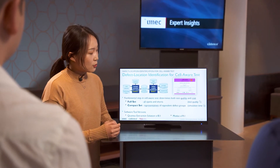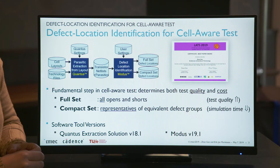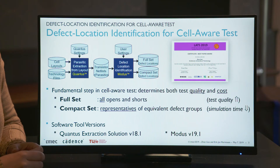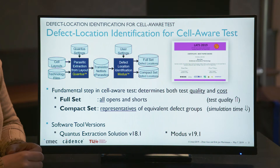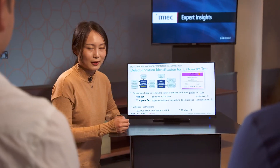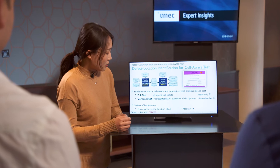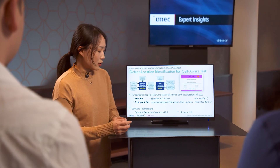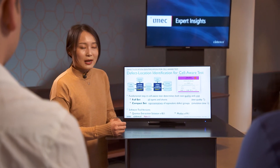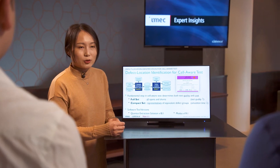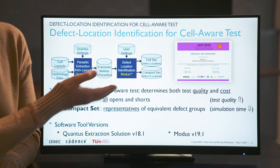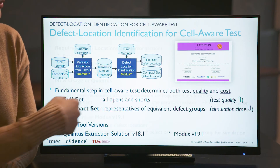Because the downstream step is defect simulation, all equivalent defects will lead to the same simulation result, so we don't need to simulate all defects. By simulating only the compact set of defects, we can save a lot of simulation time.